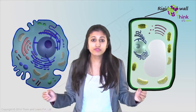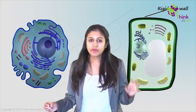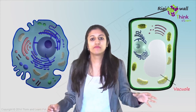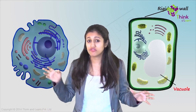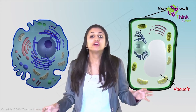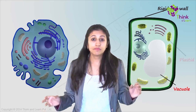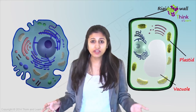Now, the second difference you can see is the big central vacuole, which is there in a plant cell but is not there, or it's very very small, in an animal cell. The third thing is the plastids, which are found only in plant cells.